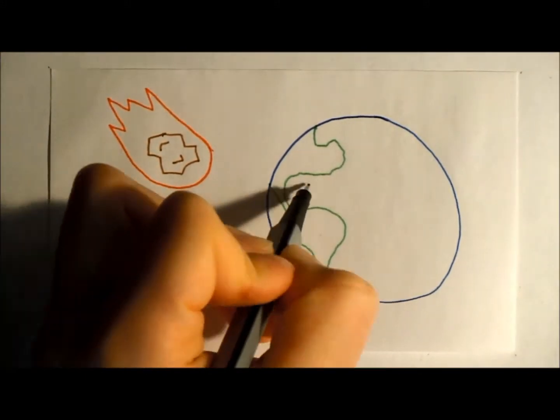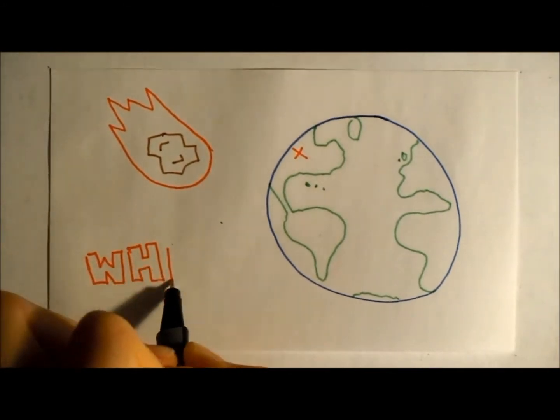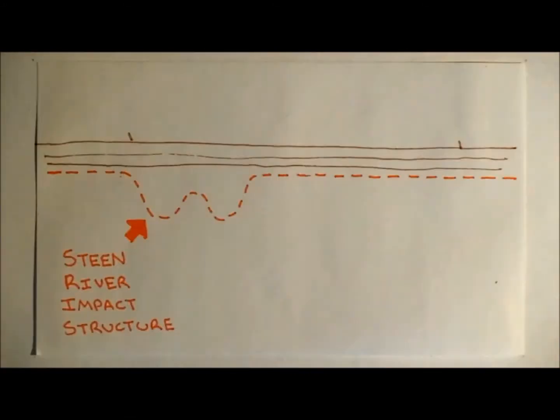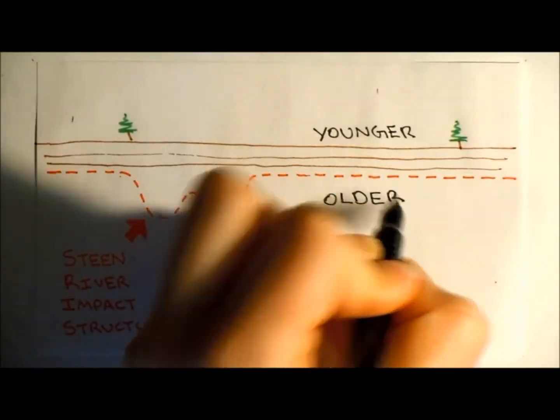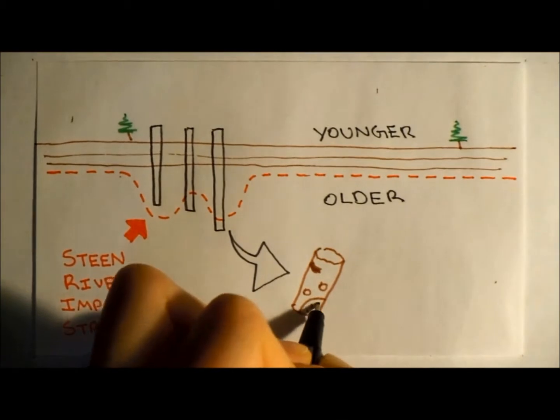However, the age of this structure is only an approximation, and we want to try and date some of the minerals in the crater to figure out when the meteorite actually hit Earth. Because the structure is so old, it is buried under younger sediments, so we use drill core to take samples from the crater.